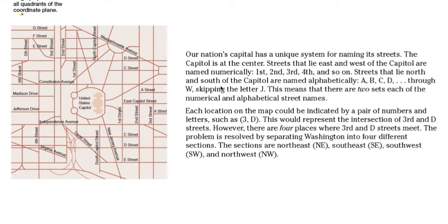Our nation's capital has a unique system for naming its streets. The capital is at the center. Streets that lie east and west of the capital are named numerically: first, second, third, fourth, and so on and so forth.